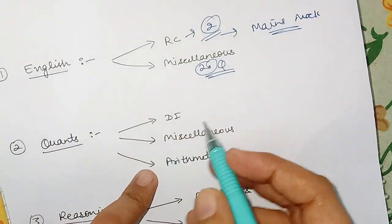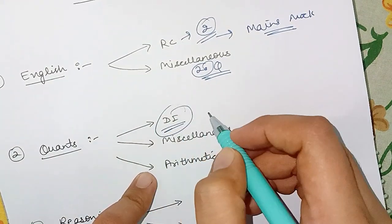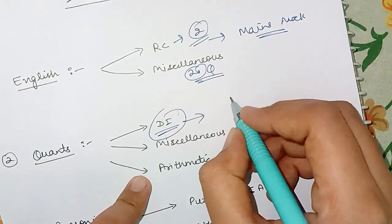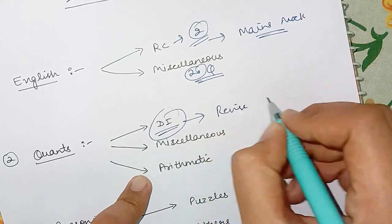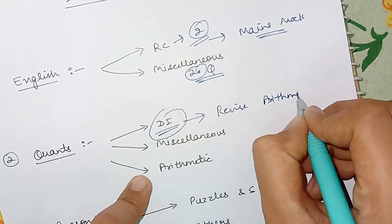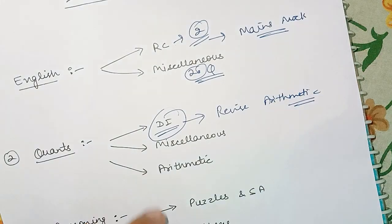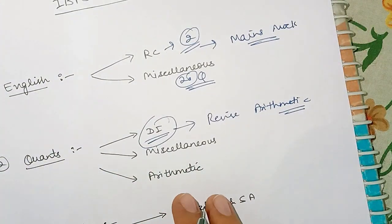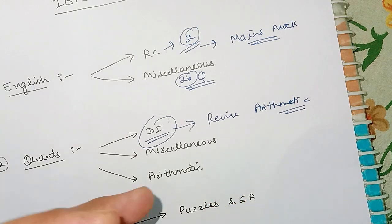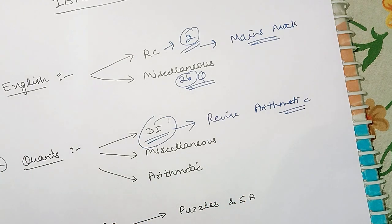Now the second thing is DI. For DI also you should practice, and for DI I would suggest you to revise your arithmetic basics because the DIs are of arithmetic. So I suggest you to revise the arithmetic basics from your notes and then you should attempt the DIs. Like if you are doing a DI of simple and compound interest and you are confused, then try to revise the basics.